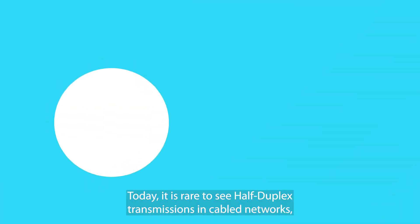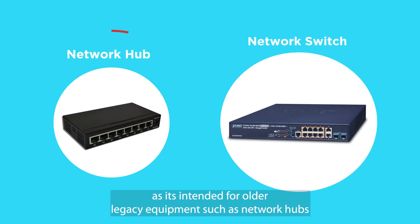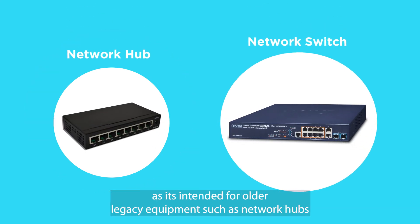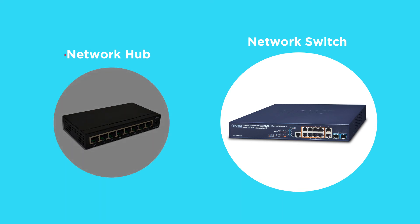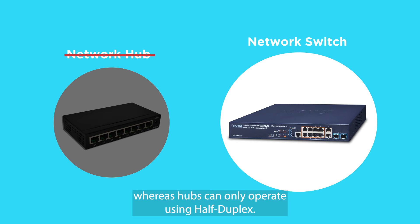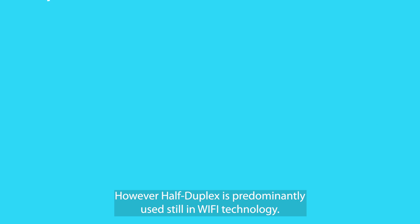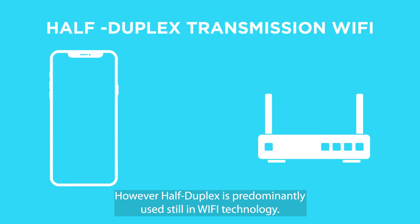Today, it's rare to see half duplex transmissions in cable networks as it is intended for older legacy equipment such as network hubs, which are basically obsolete now. Nowadays we use network switches, and they can provide and operate using full duplex, whereas hubs could only operate using half duplex. However, half duplex is predominantly still used in Wi-Fi technology.